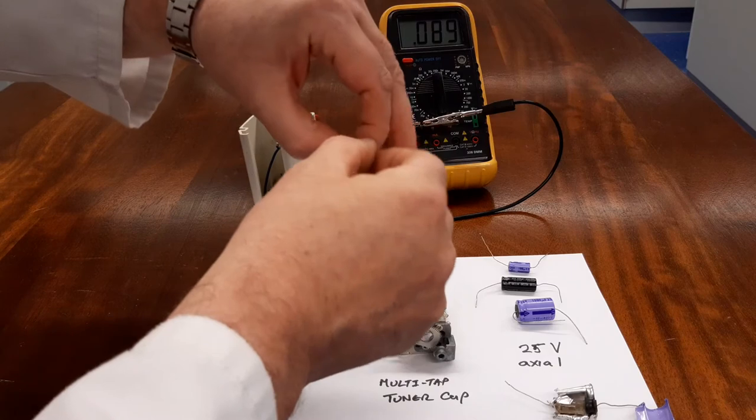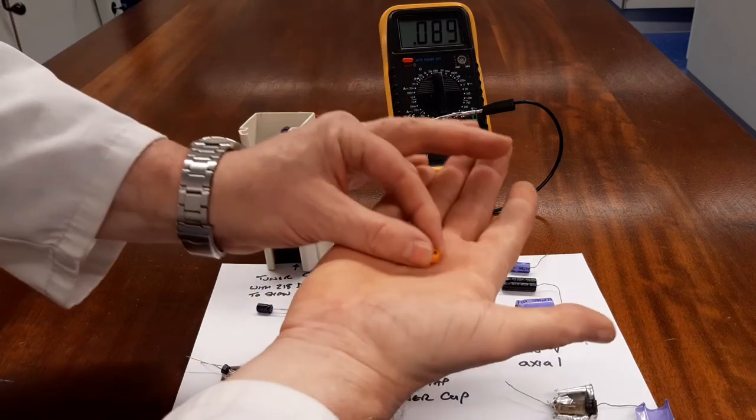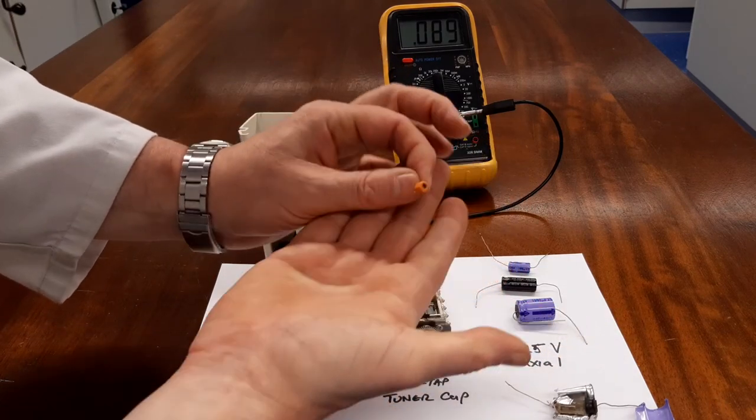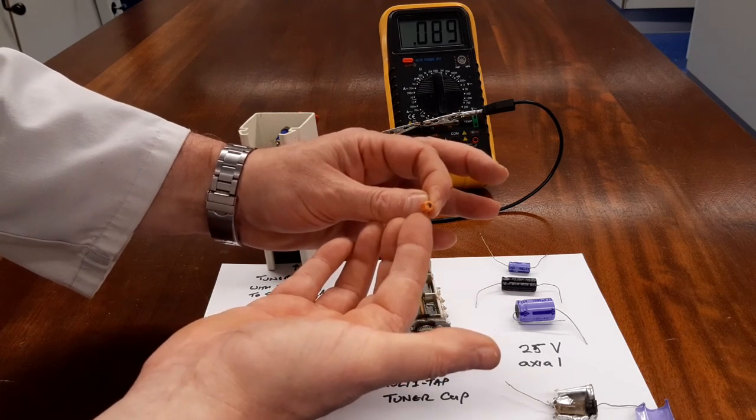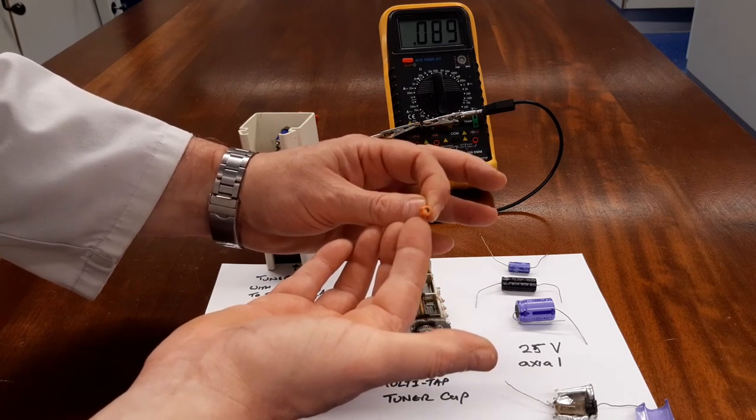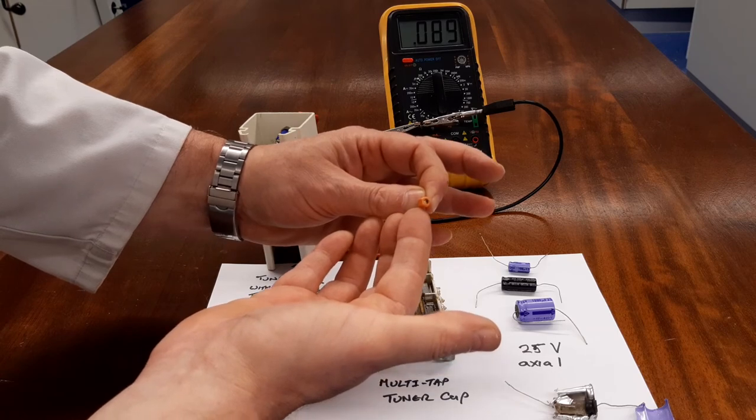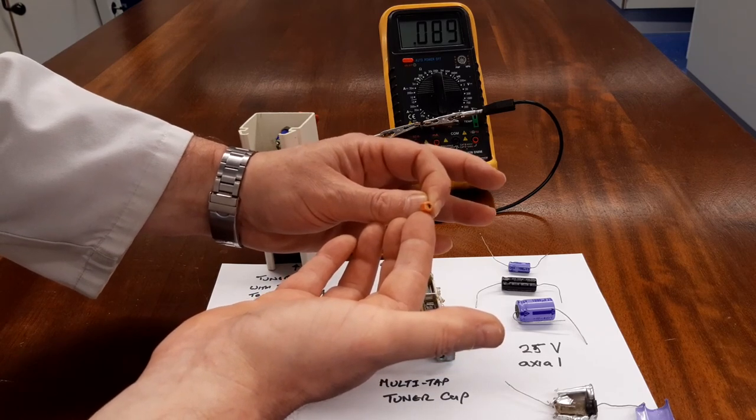Don't get these confused with trimming capacitors, which are very small like this and used to fine-tune a circuit. They're used for trimming or as a preset.